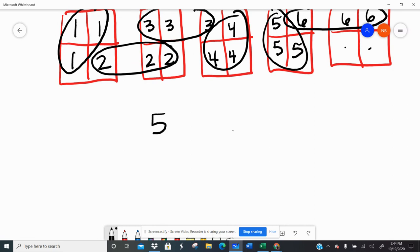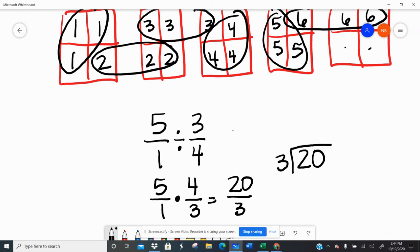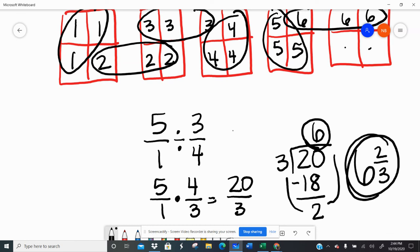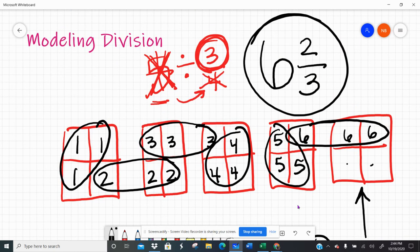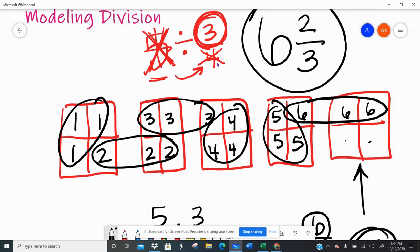Let's check that mathematically. Five divided by three fourths. Keep, change, flip gives me twenty over three. Twenty divided by three. Three goes into twenty six times. Six times three is eighteen. I have two left over. Well, looky there. Six and two thirds. So my model and my math match up. So you take your whole number, split it into groups, which is the denominator, and the numerator becomes your new group number.